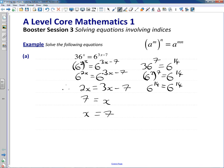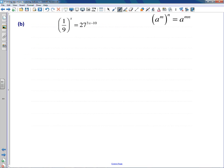Looking at (b), much trickier again. We're not going to use logarithms or anything like that. We're just going to spot a connection between 9 and 27, and we can rewrite both of those numbers using 3 as our base.